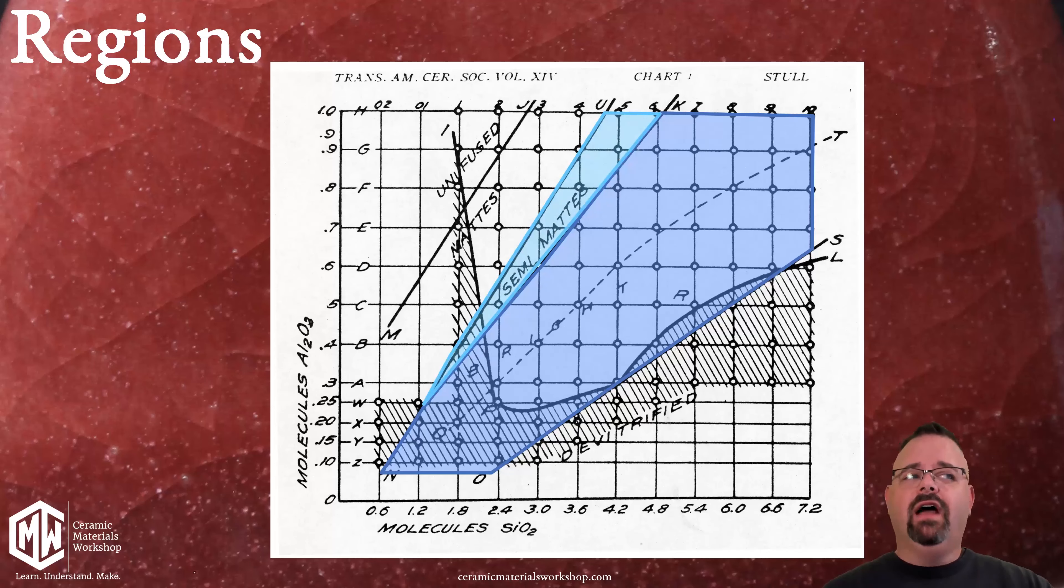Similarly we've got two sections. This one says semi-matte and this one says matte and those are really one big matte region but he's making a distinction between how matte those glazes are. How rough of a texture they develop and where they fall will dictate the texture of that glaze.